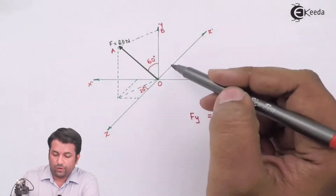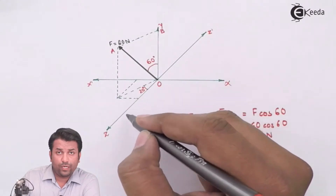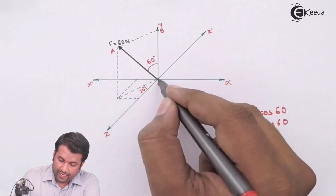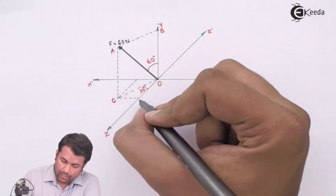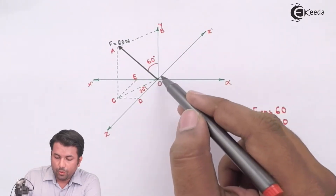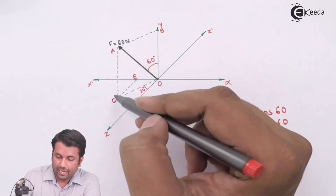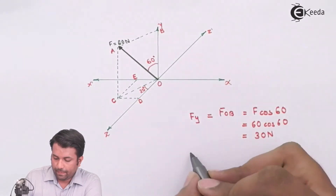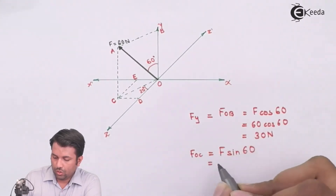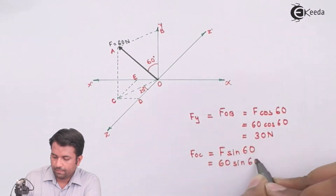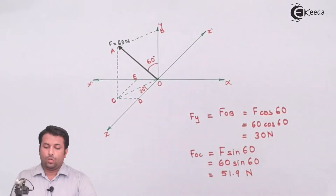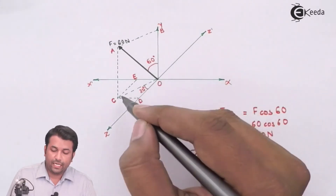Similarly, I need to find the z and x components. I'll name the points C, B, and E. In triangle OCA, I know CA and need to find OC. OC is the sine component of the force — that is, F × sin(60°) — which comes out to be 51.9 Newtons. So I have this projected force OC as 51.9 Newtons.